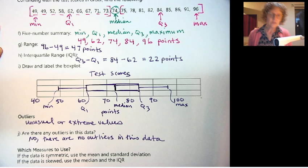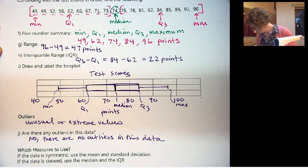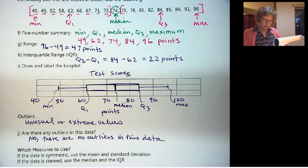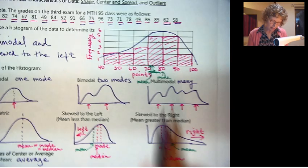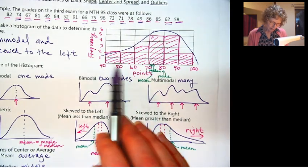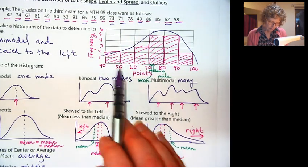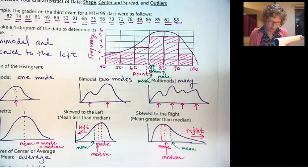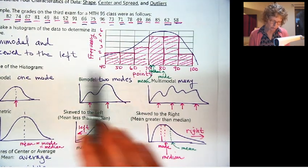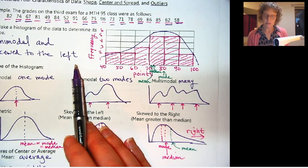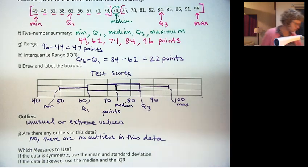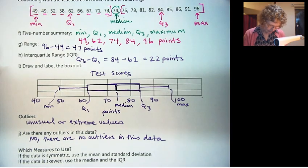We can also tell from the histogram. Notice we don't have any gaps. So that's another indication that there are not any outliers. If we had a big space and then there was a 22 down here or something, then that would definitely be an outlier.